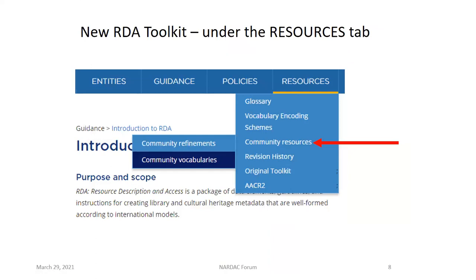In the new RDA Toolkit, the content from the appendices will be found under the Resources tab, most of it under the menu heading Community Resources. This screenshot reflects the planned organization for the next Toolkit update. There are also sub-menus for Community Refinements and Community Vocabularies. This organization reflects a key separation in the content of the Toolkit. The main part of RDA is found under the Guidance and Entity sections and is covered in the Element pages, as well as the associated Policy Statements. Community Resources will reflect conventions that are specific to communities. RDA is no longer called the Anglo-American Cataloging Rules — it has an international focus and is designed to work in many languages.